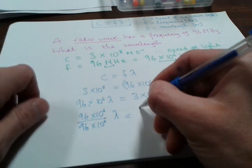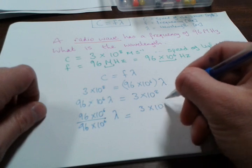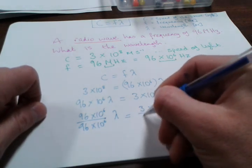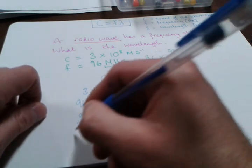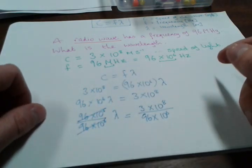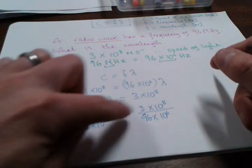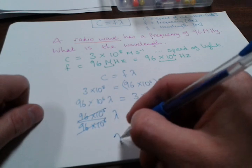These go away and you end up with lambda equals 3 × 10^8 over 96 × 10^6. And what we should get for this...